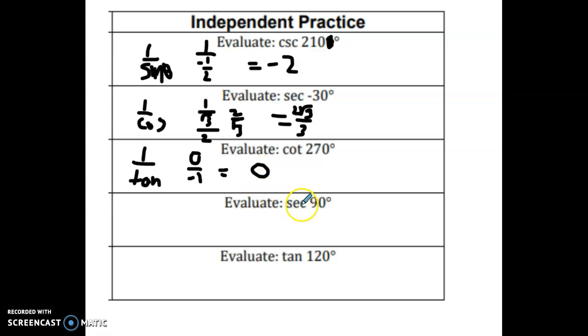The secant is 1 over the cosine of 90, so I find 90 degrees. The cosine of 90 is 0, so 1 over 0 would then be undefined. So the secant of 90 degrees is undefined.